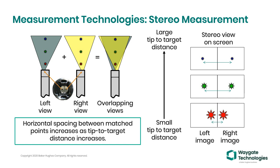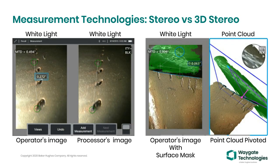Comparing traditional stereo on the left to Real 3D stereo on the right: on the left, you have two white light images to look at—one from each side of the prism—and you'll notice the cooling holes at the bottom are closer to the center while the top of the tilted blade is further from the camera and spatially separated outward. To measure, you place a cursor on the left image and the processor must find exactly the same pixel on the right image, or you will not get accurate measurement data.